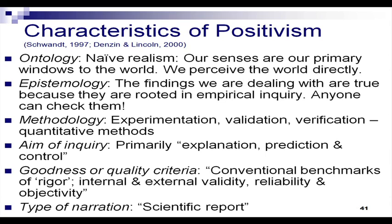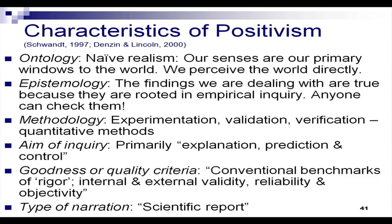The methodology of positivism is experimentation, validation, verification, and quantitative methods. The aim of inquiry is primarily explanation, prediction, and control — describing things by testing them, seeing patterns and predicting on the basis of those patterns, and controlling certain variables to see how dependent variables are affected by manipulating independent variables.